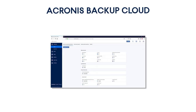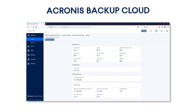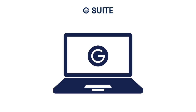Acronis Backup Cloud is a powerful hybrid cloud backup solution for managed service providers that protects all their customer systems and mobile devices anytime, anywhere, and faster than anyone else. In turn, G Suite is a sophisticated suite of secure, cloud-based collaboration and productivity applications powered by Google.